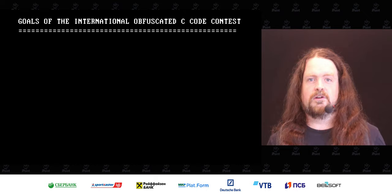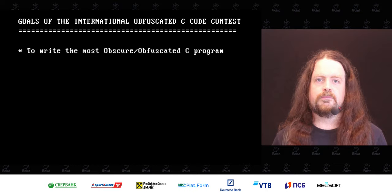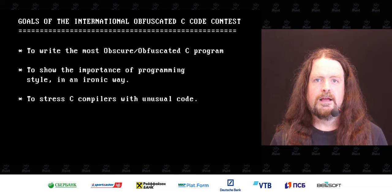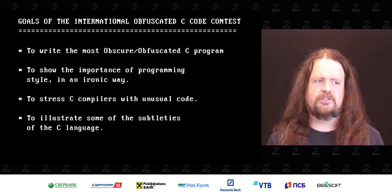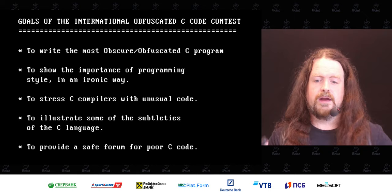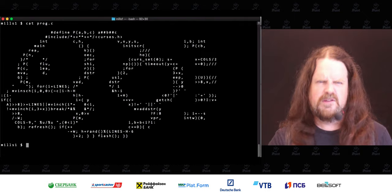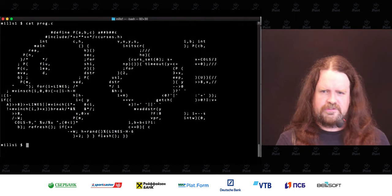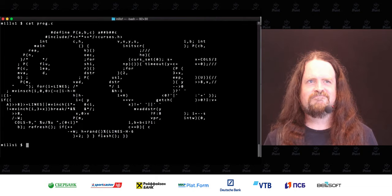The goals of the IOCCC were simple: to write the most obscure or obfuscated C program, to show the importance of programming style in an ironic way, to stress C compilers with unusual code, to illustrate the subtleties of the C language, and to provide a safe forum for poor C code. This competition has run every year and is still running today. I'm sure there are some C programmers here — Jpoint is mainly a Java conference, but we've all done a bit of C. Take a look at this code and tell me: what does this program do? Anyone want to do a quick code review?